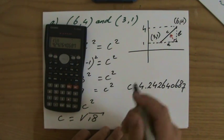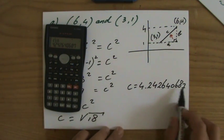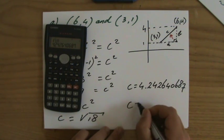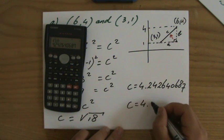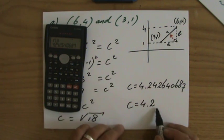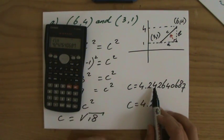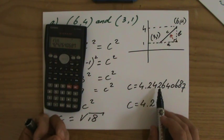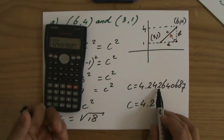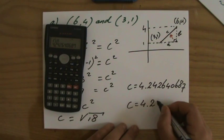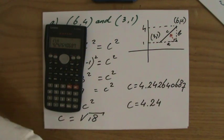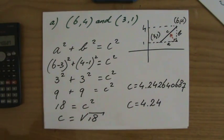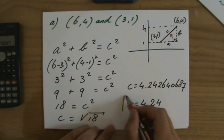We always correct to three significant figures. One significant figure, two significant figures, then the next one is the third. Does the four stay a four or does it go up to a five? It depends on the next one. It's lower than five, so the four stays a four. The length of the line connecting my two points (6,4) and (3,1) is 4.24.